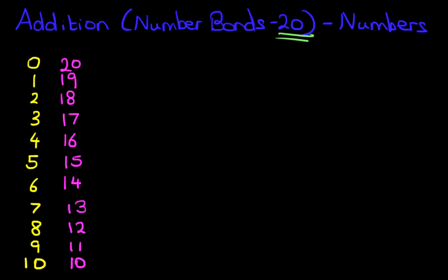Now what do you notice about these sets of numbers? Let's start with the top one. 0 and 20. If you put a plus sign in there, it equals 20.